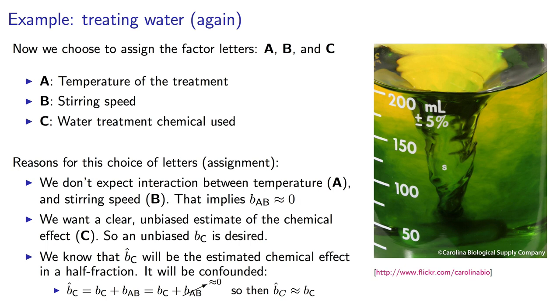But I've used my knowledge of the system, that I know that that A-B interaction is going to be small, so I'm pretty sure that the effect of C, the chemical effect, will be a good estimate of that chemical effect and not be confounded with the A-B interaction.